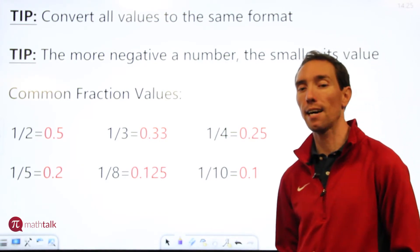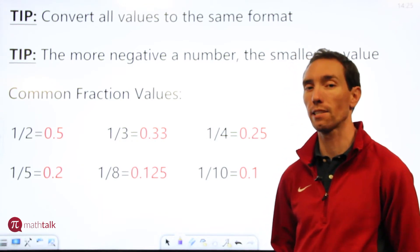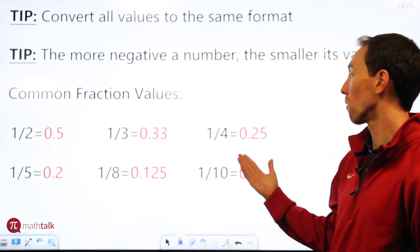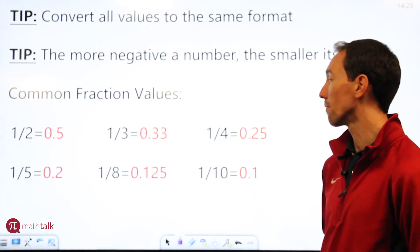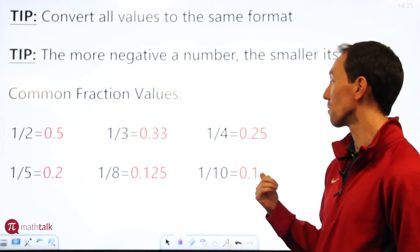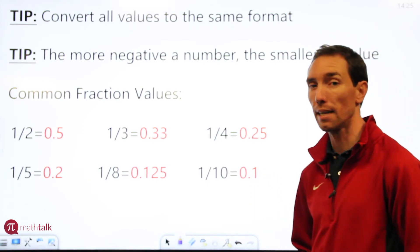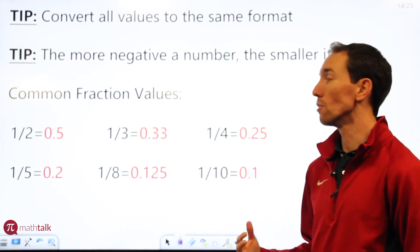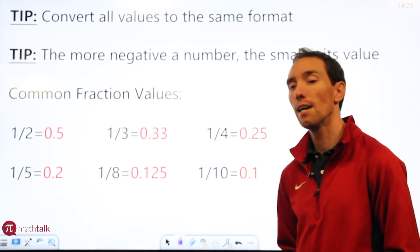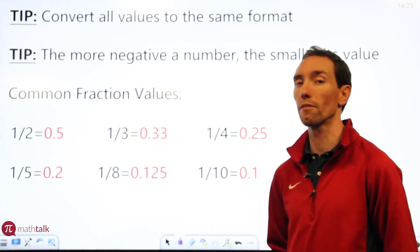You can use these to kind of figure out the values of other fractions you may see. For example, let's say you're looking at one-fourth is 0.25. If you have three-fourths, all you need to do is take 0.25 and multiply it by three, and then you have your decimal. You can see how these baseline fractions can help you figure out the decimal value for other ones.